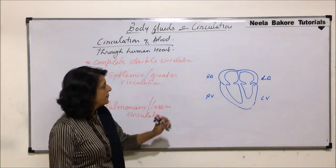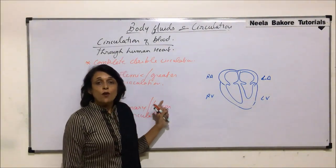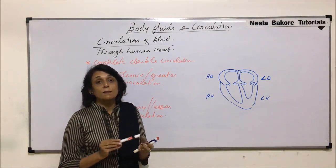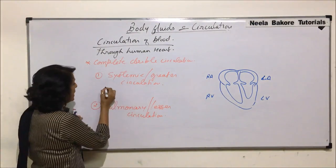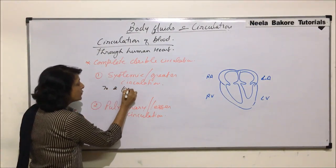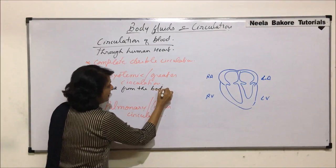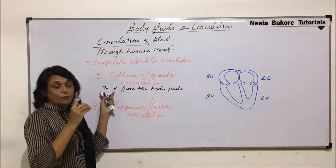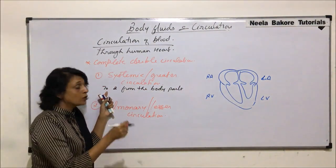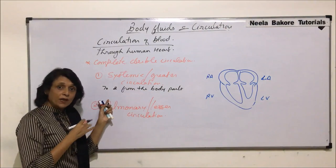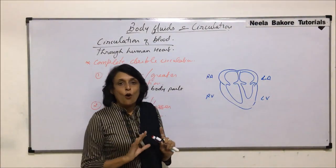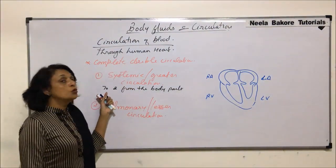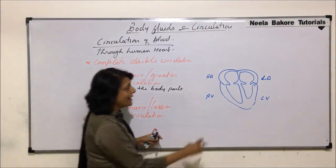We are talking only about the path of blood. Systemic circulation basically means the circulation of blood to and from the body parts. Let us see which blood vessel is taking the blood to the body parts and bringing it back from the body parts.